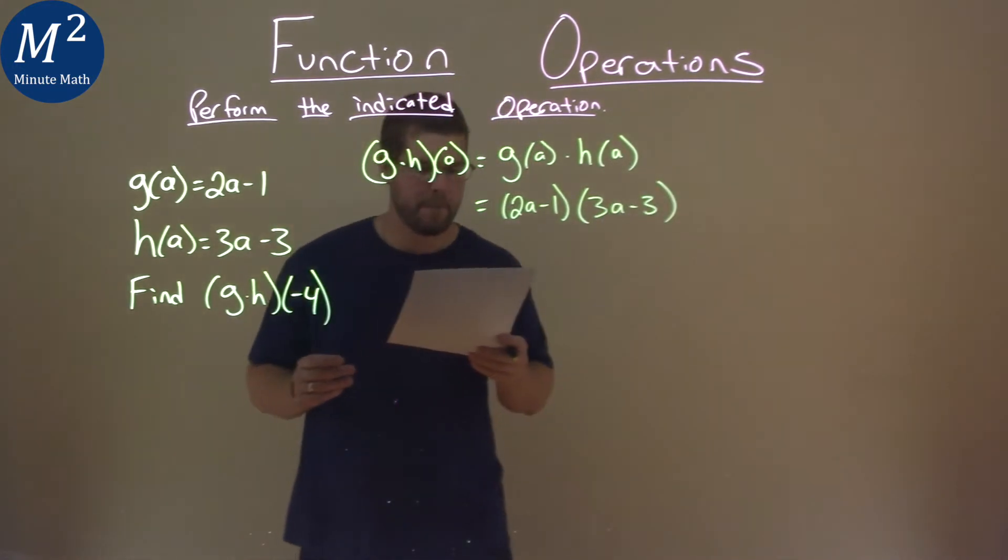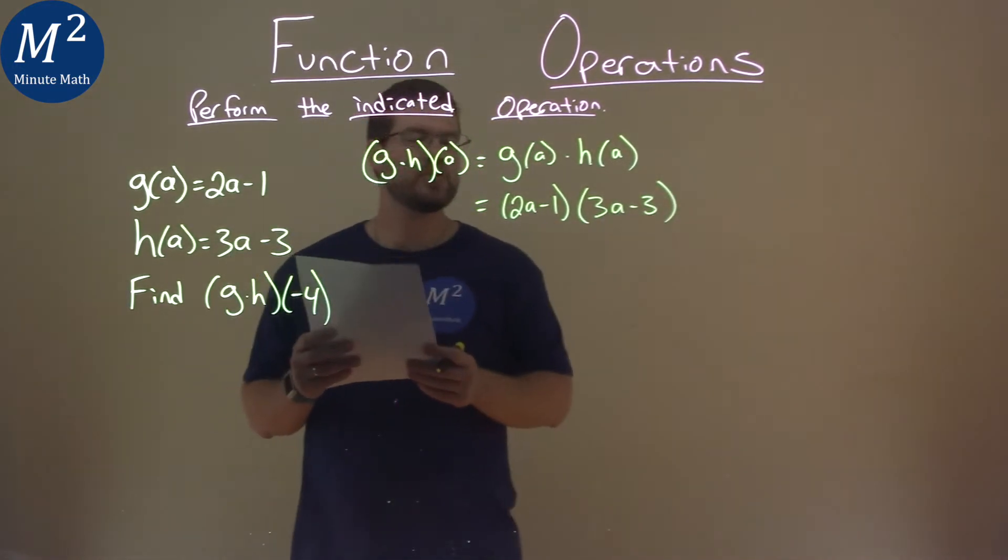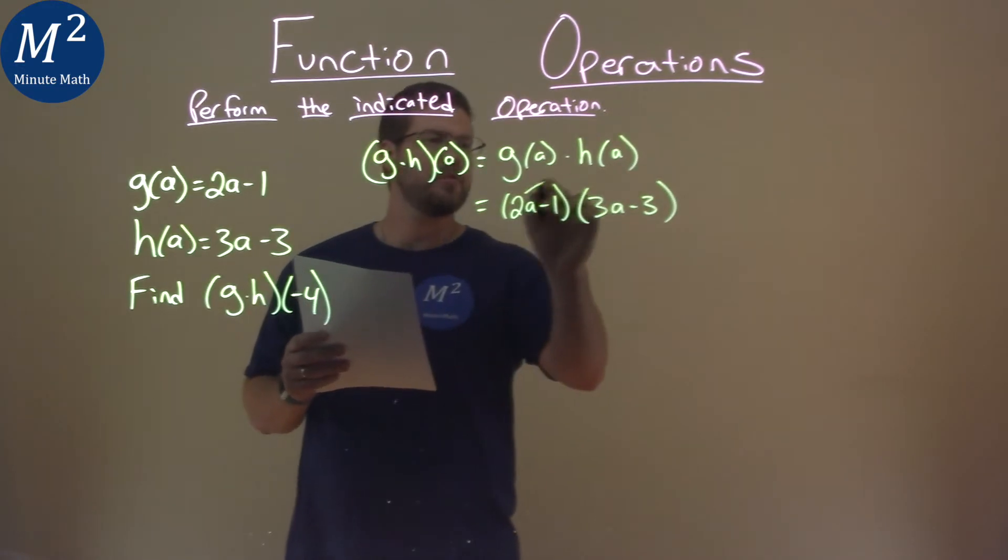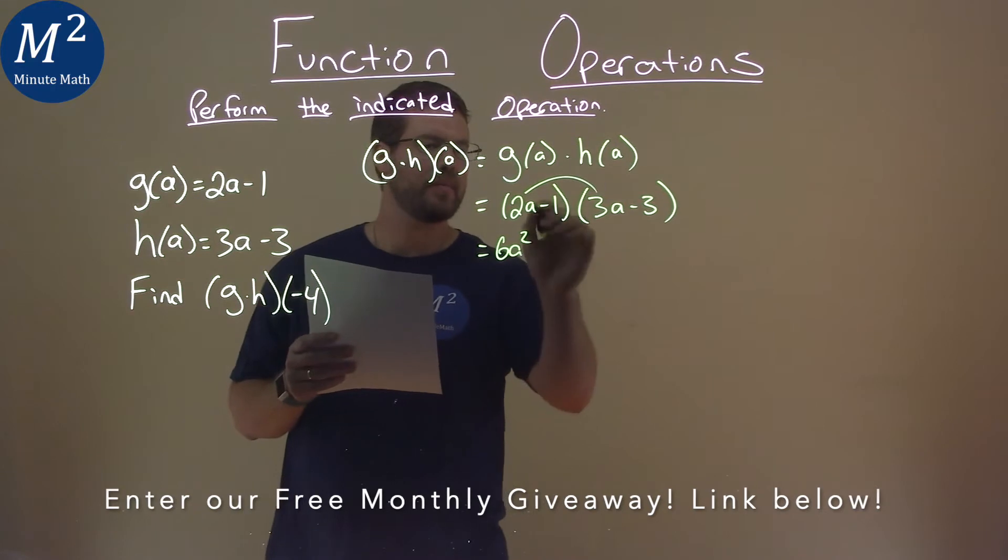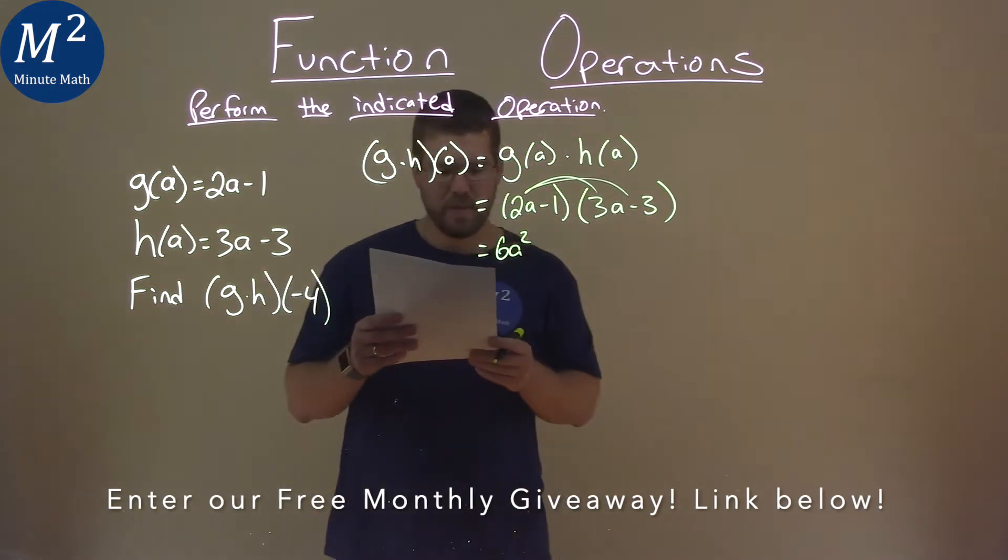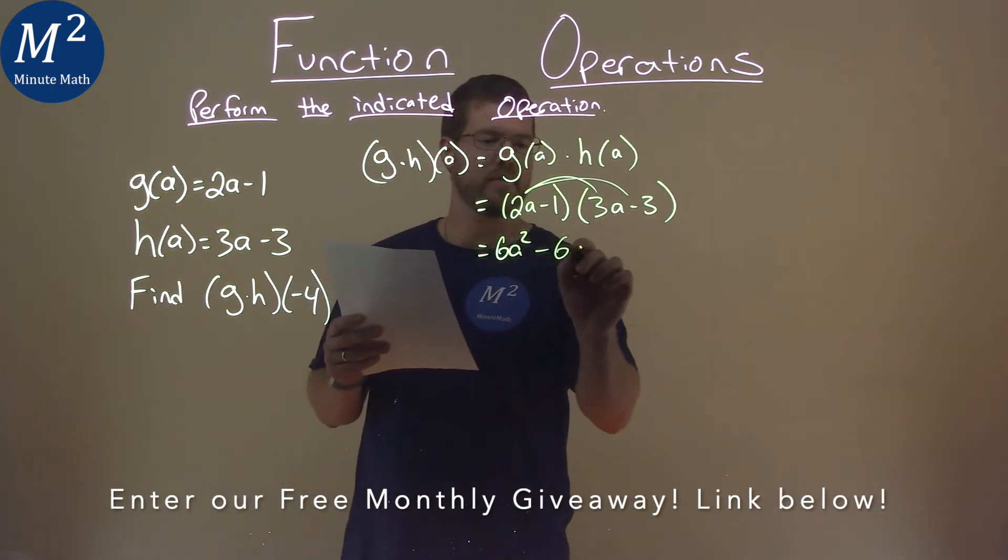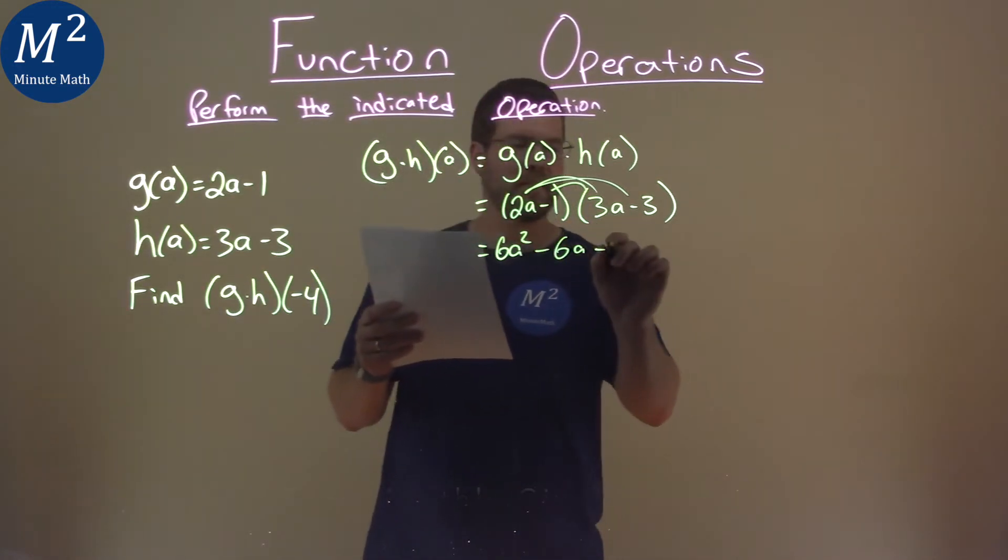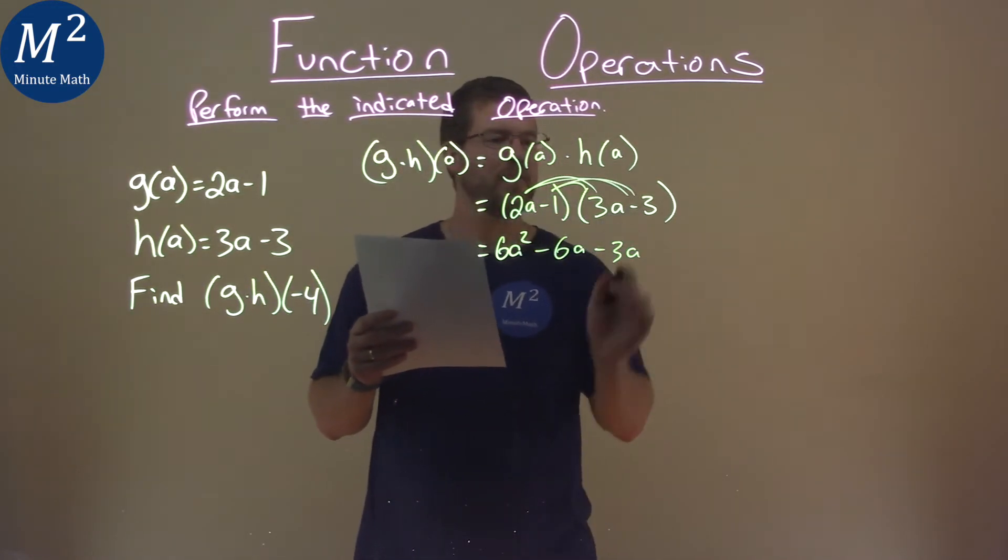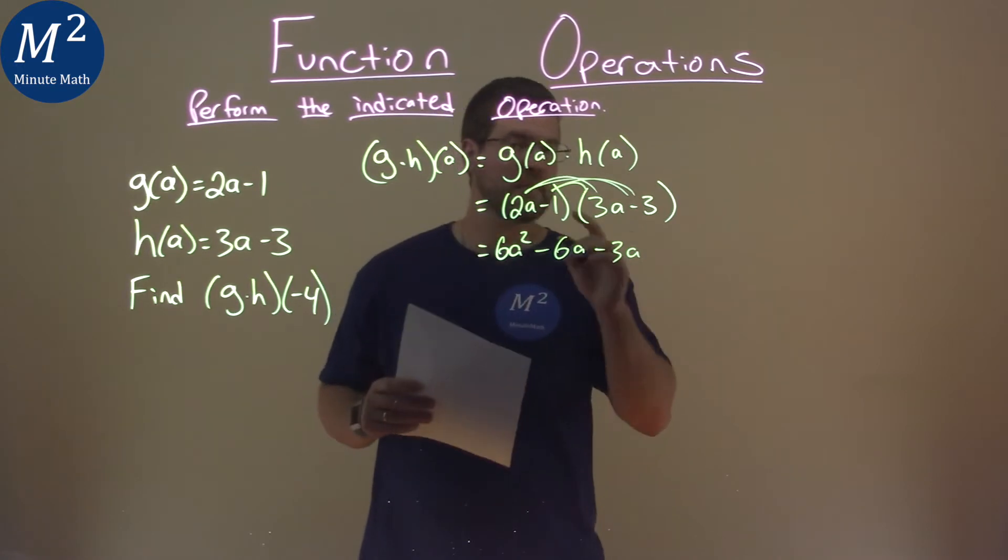Okay, so now let's distribute this. 2a times 3a is 6a squared. 2a times minus 3 is minus 6a. Negative 1 times 3a is negative 3a. And negative 1 times negative 3 is positive 3.